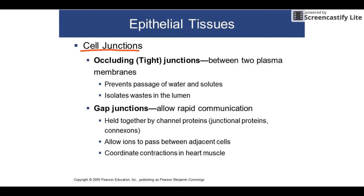Because epithelial cells are tightly packed, they have several types of cell junctions holding them together. The first are occluding junctions — watertight junctions that seal between cells. For example, the lining of the anus has watertight junctions so bacteria from feces can't diffuse back into the body. Your skin also has a lot of occluding junctions so it doesn't soak up everything it touches.